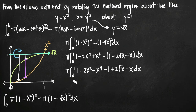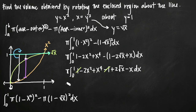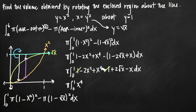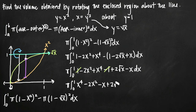Canceling the 1 minus 1, and reordering terms from highest to lowest degree, we get pi times the integral from 0 to 1 of x to the fourth minus 2x squared minus x plus 2 square root of x, dx.